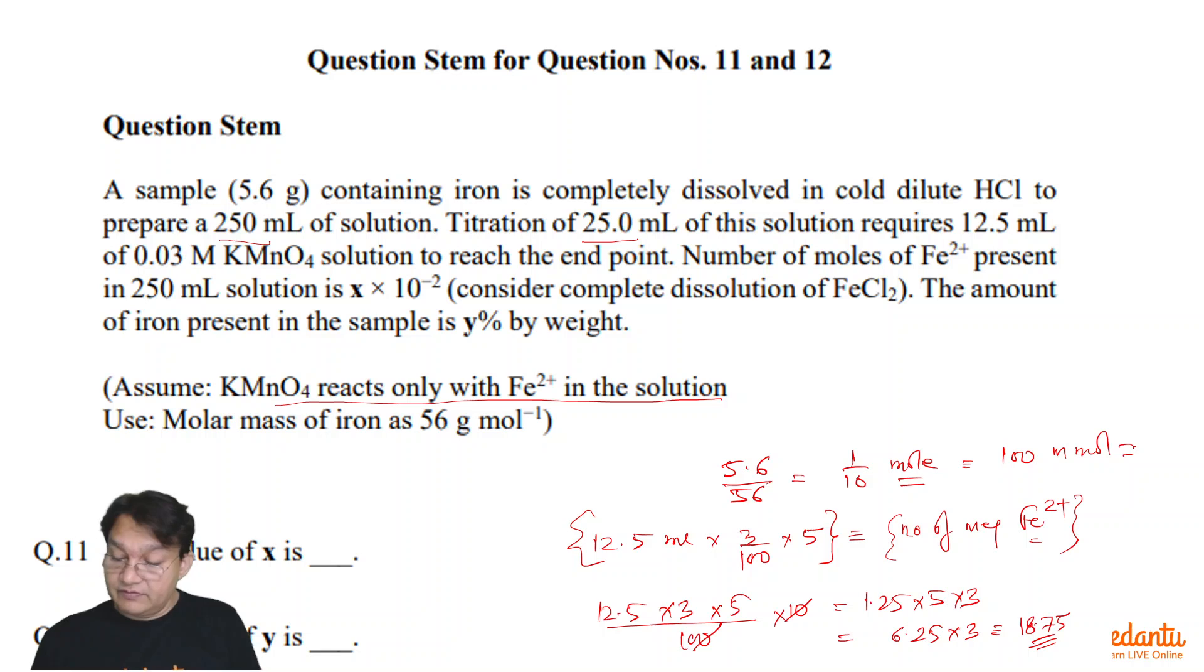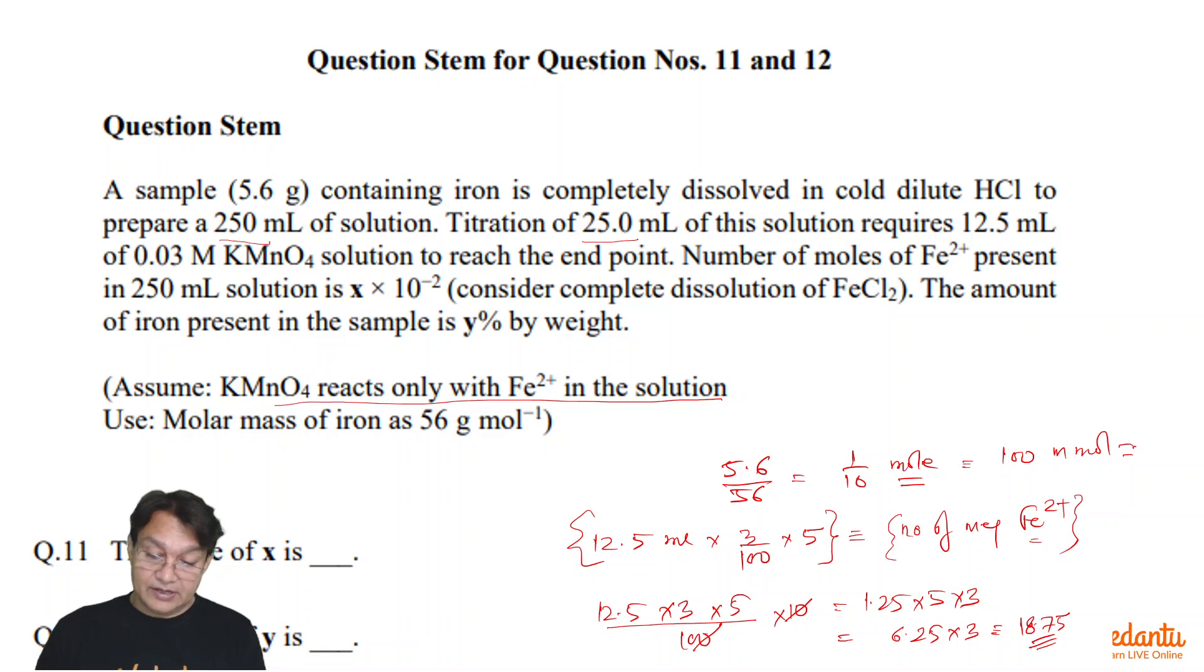So we have 18.75 milliequivalents of Fe2+, and which means 18.75 milliequivalents of Fe2+ is there. So out of the 100 milliequivalents of Fe, we have 18.75 milliequivalents of Fe2+. So that will settle this problem.